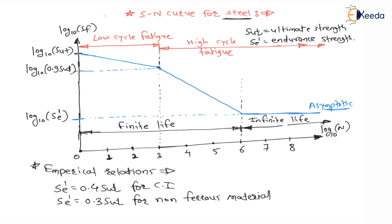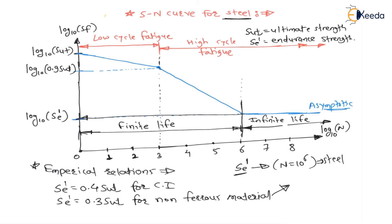For steel, the endurance strength SE' corresponds to N = 10⁶ revolutions (1 million revolutions), as shown on the diagram. But for non-ferrous materials, the endurance strength SE' corresponds to N = 10⁸ to 5 × 10⁸ revolutions — this correction must be considered.